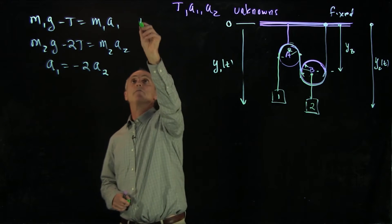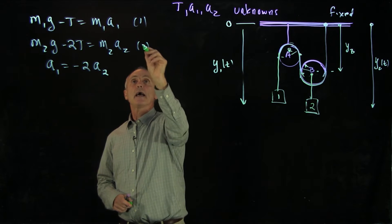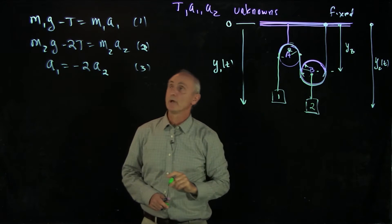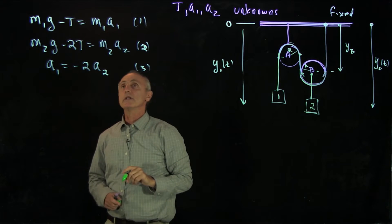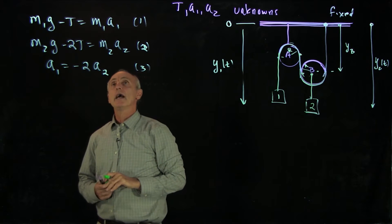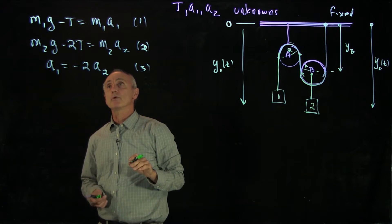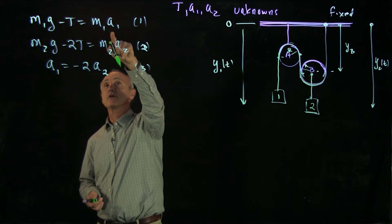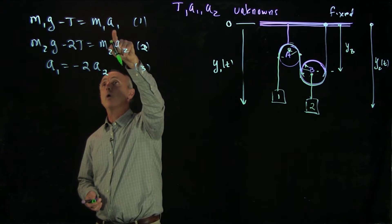So now we have a system of three equations, and we can solve for any of these quantities that we want. So one way to do it is to identify an equation and to identify a quantity that we would like to solve for. So for instance, let's identify that we want to solve for a1 first.